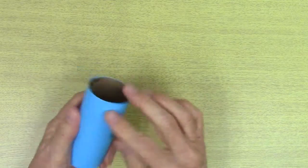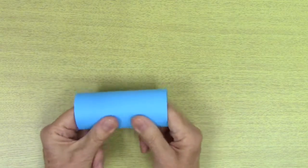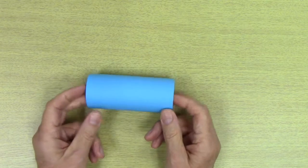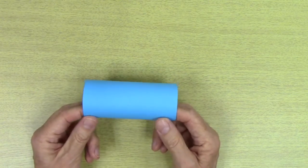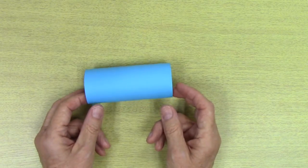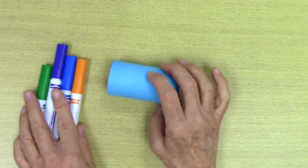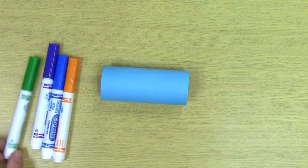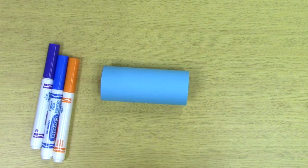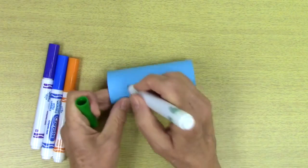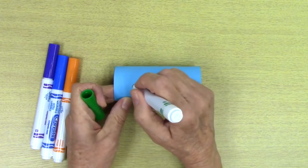So now we have room to decorate. And you can decorate any way you want. You could put stickers on there. You could use crayons. You could use markers. I have some markers here. So I think I'm going to do the same thing I did on my other one. I'm going to make some spirals.